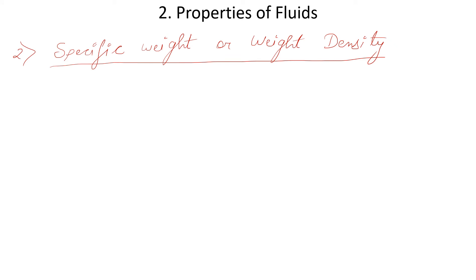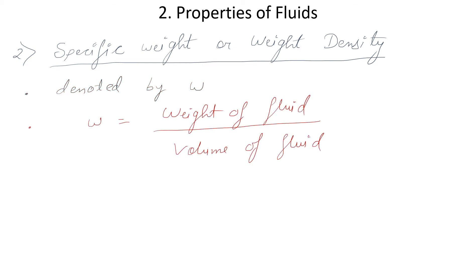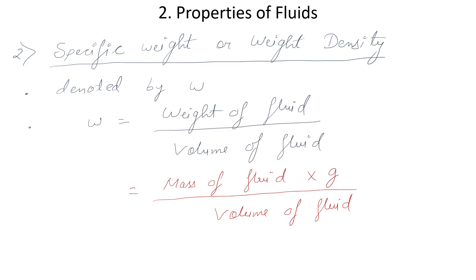The second property is specific weight or weight density, generally denoted by w. It is the ratio of weight of fluid to the volume of fluid. We can rewrite this as mass of fluid multiplied by acceleration due to gravity — because weight equals mass times acceleration due to gravity — divided by volume of fluid.